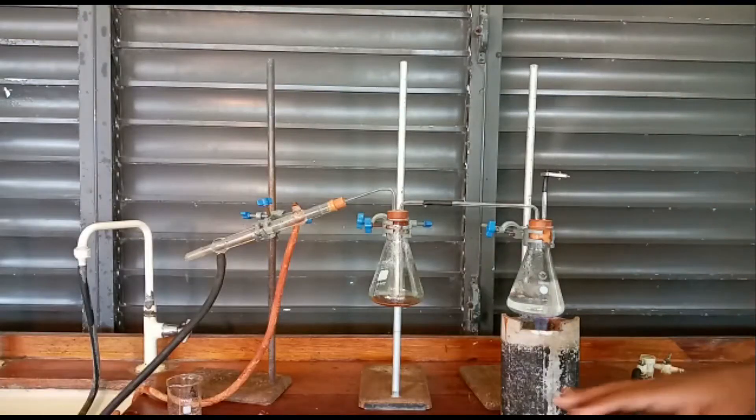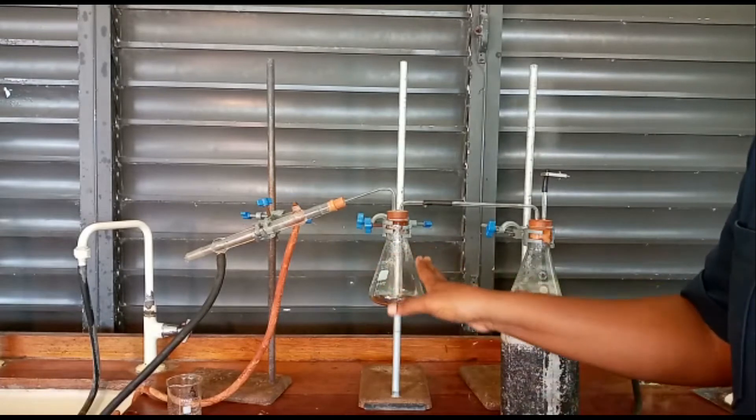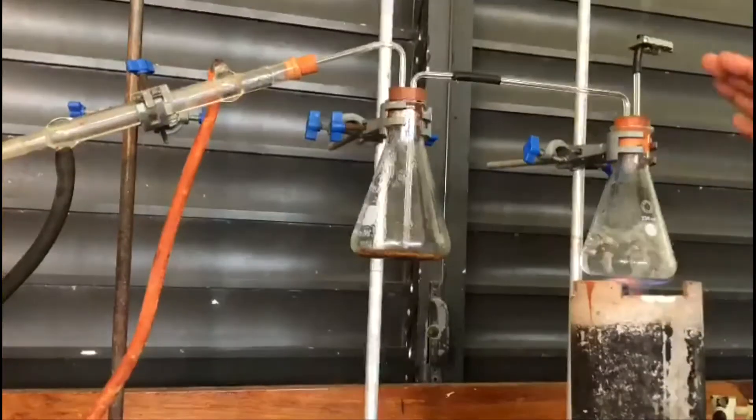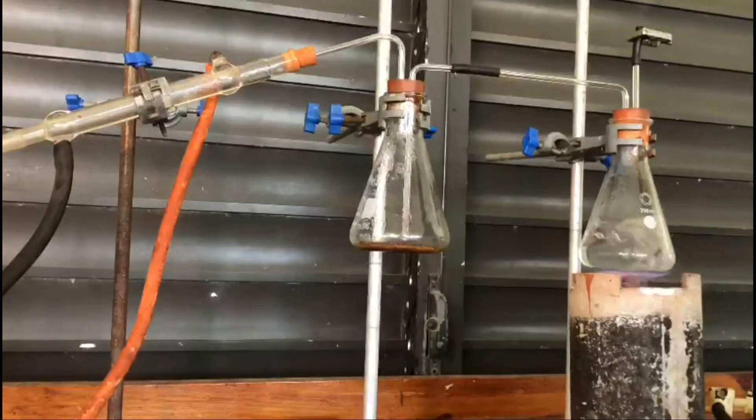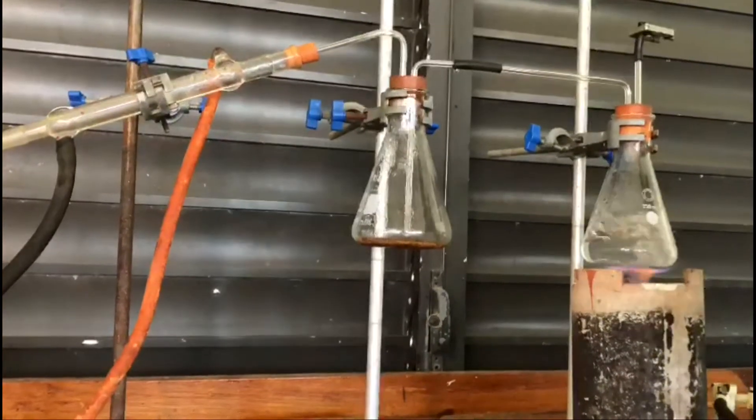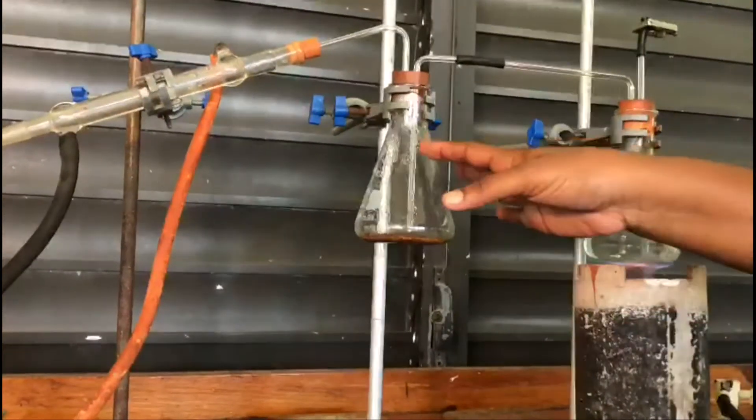One thing to note is that we now have a colorless liquid on the side of the flask. Remember, before we had a dry brown solid, but we're seeing now that we have colorless liquid on the side.